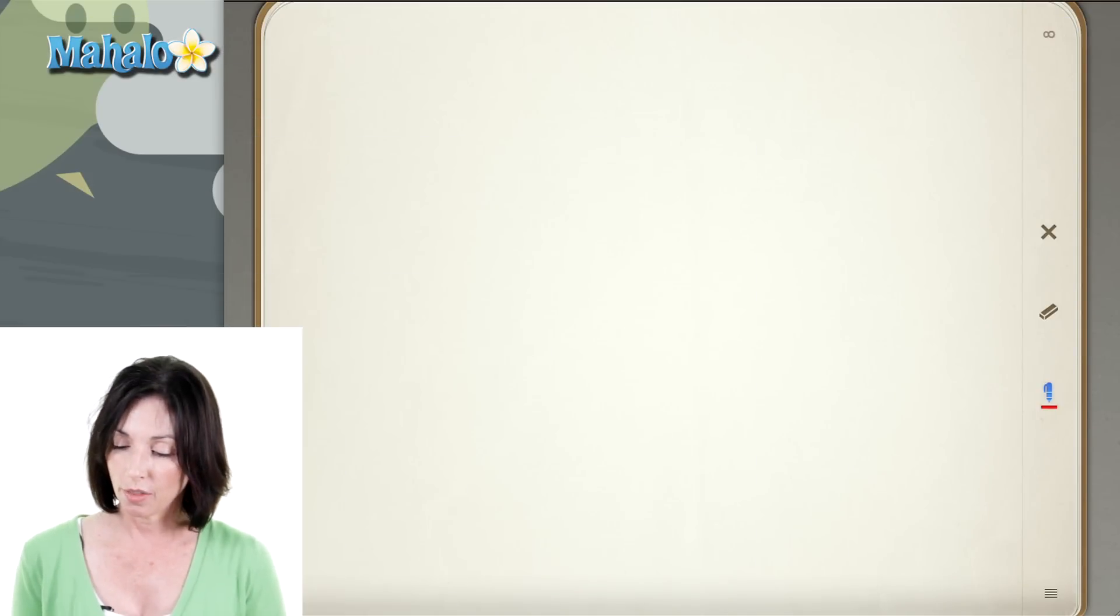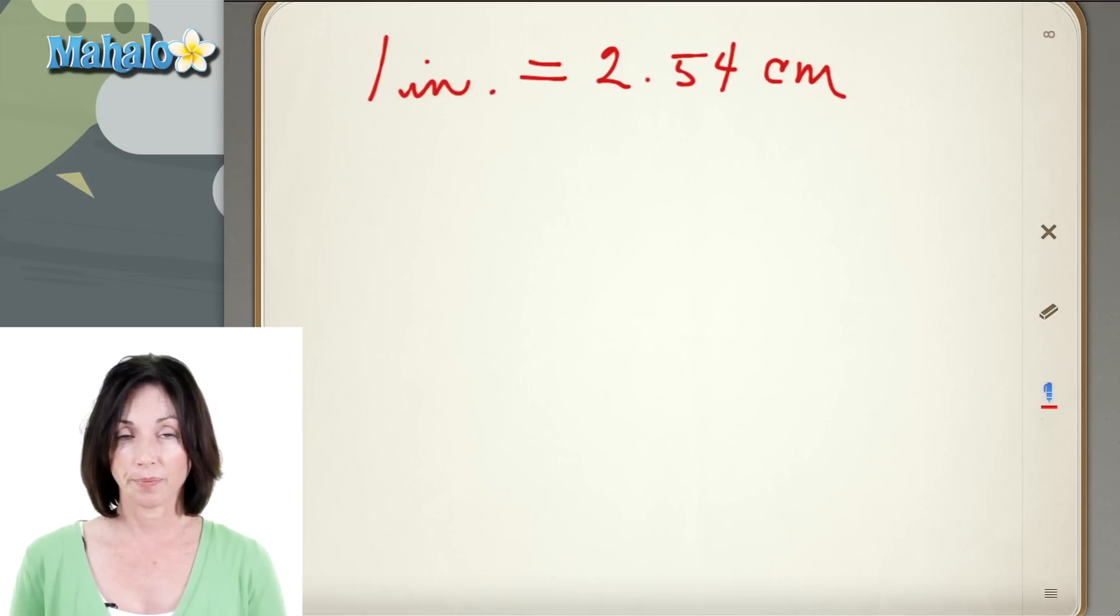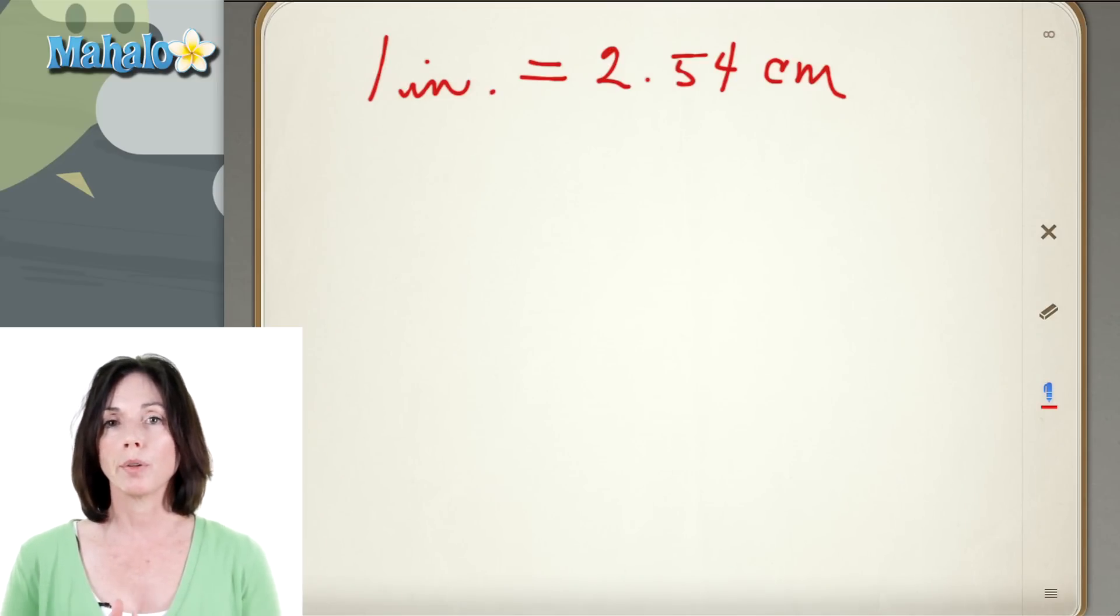So what's important to know about this is the conversion factor. How many inches there are in how many centimeters. So there is one inch for every 2.54 centimeters. That's our conversion factor. So what we're going to do is we're going to make this a proportion and then make a little proportion equation and figure it out.